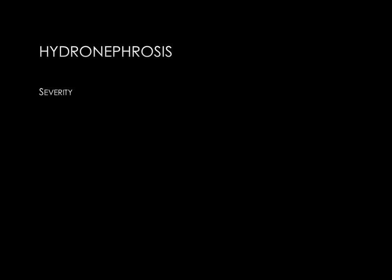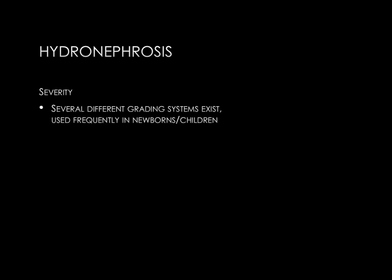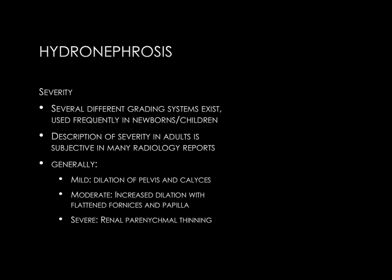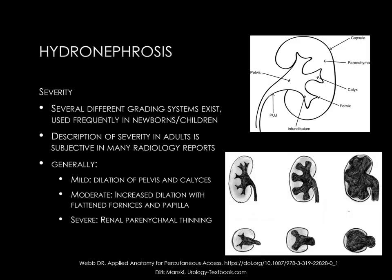Regarding hydronephrosis severity — how do we convey how severely dilated the renal collecting system is? There are several grading systems in radiology with up to five grades, frequently used in newborns and children. In adults, the description of severity is likely to be subjective. A general classification uses mild, moderate, and severe hydronephrosis. Mild is dilation of the renal pelvis and collecting system. Moderate means the dilation is worsening, the renal papilla impressions are not well visualized, and there is rounding of the renal fornices. Severe hydronephrosis involves thinning of the renal cortex.